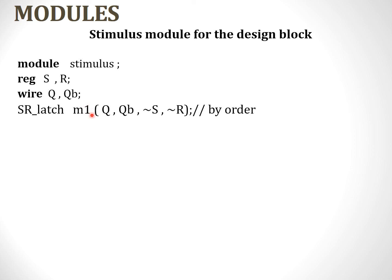This is just a name given to the instance being called. In the main design block, output variables were listed first and then input variables, so it is important to pass variables in the same order — this is the by-order method. There is also a by-name method, which we will cover in subsequent lectures. So when using the by-order method, we match every variable exactly in the order specified in the design block: Q, Q-bar, then tilde-S and tilde-R — the tilde symbol representing S-bar and R-bar respectively.